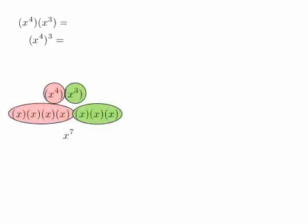So the first situation, you have x to the 4th times x to the 3rd. And we actually just show what x to the 4th is, and those are the pink circles over there. So that's just x times x times x times x. x to the 3rd is x times x times x.